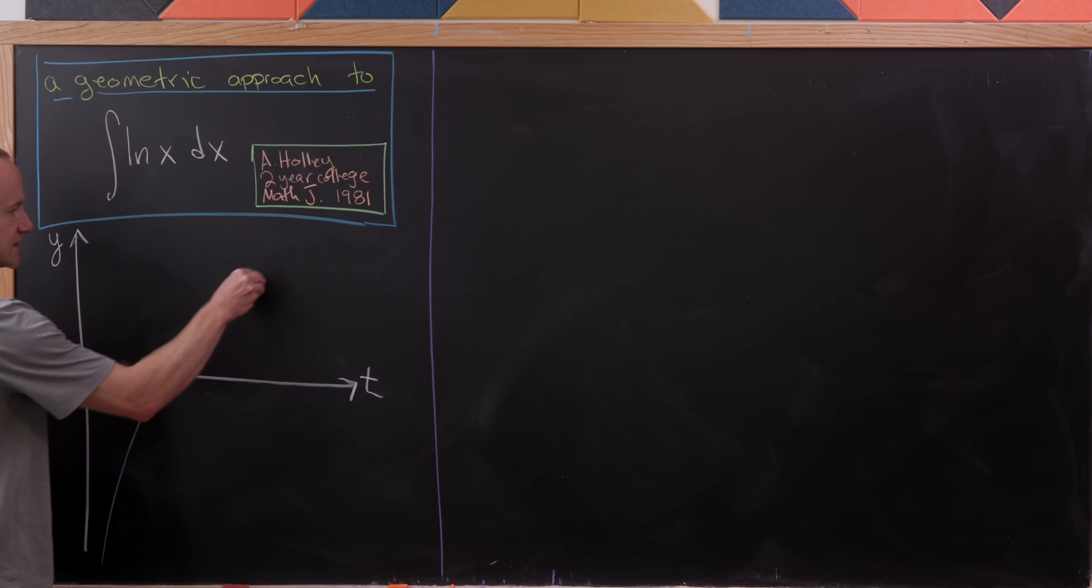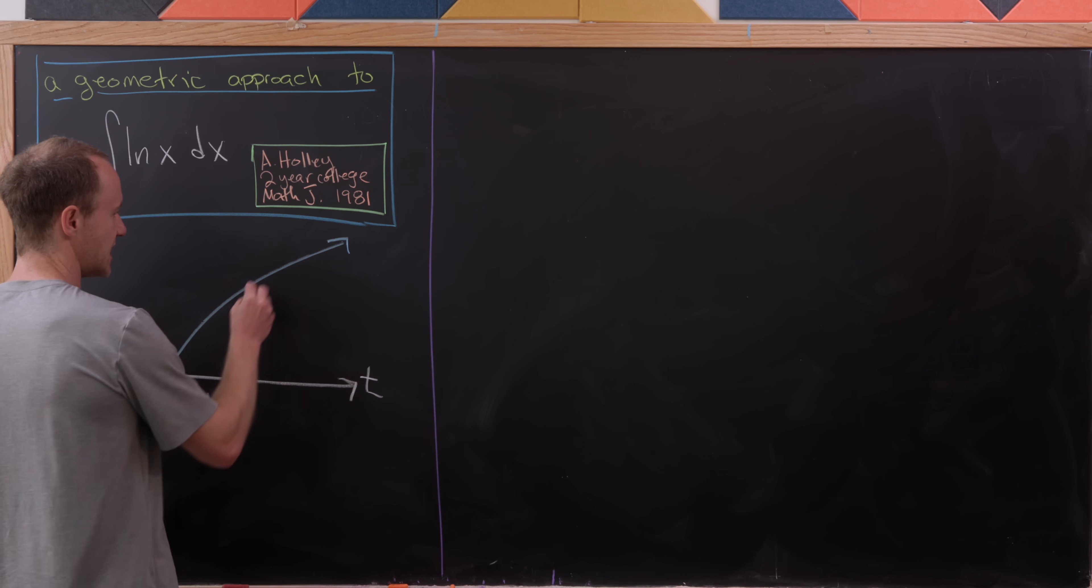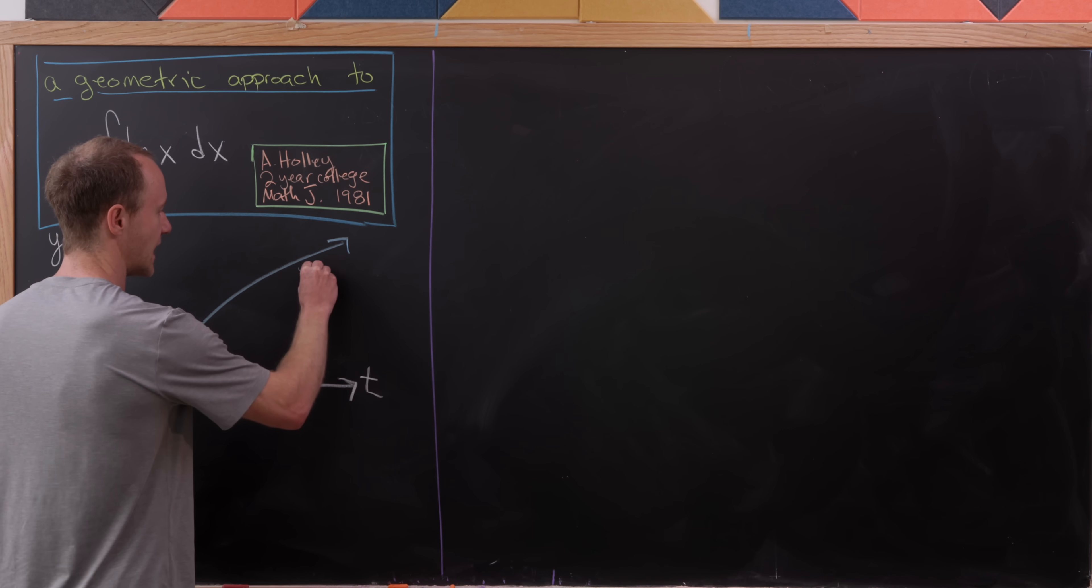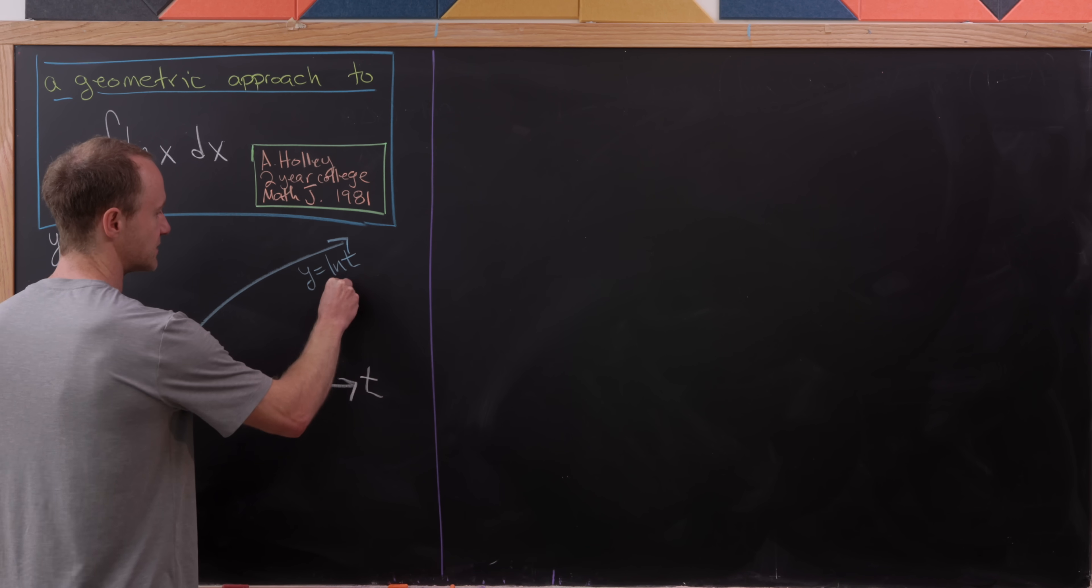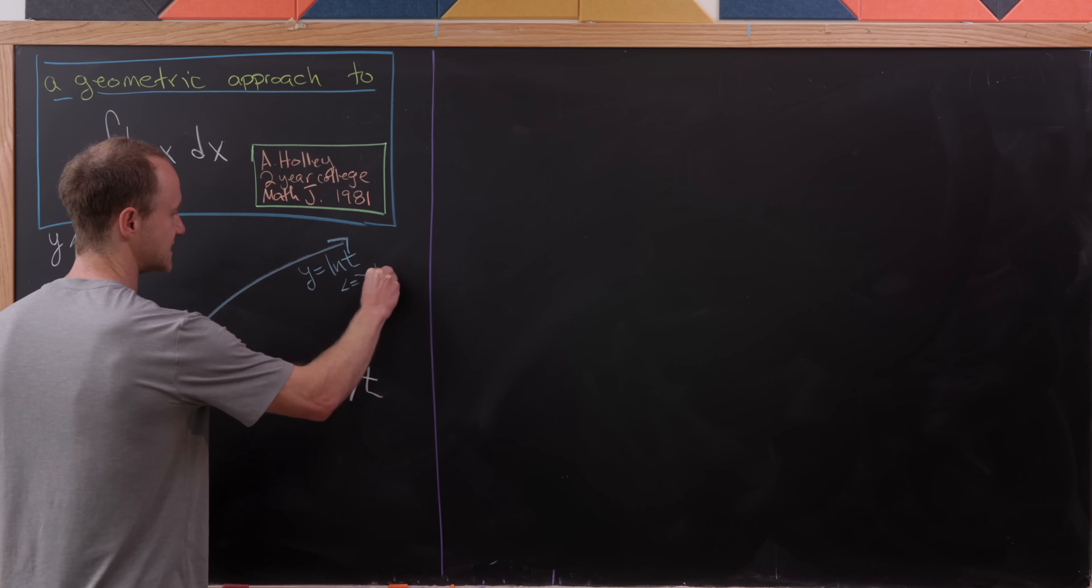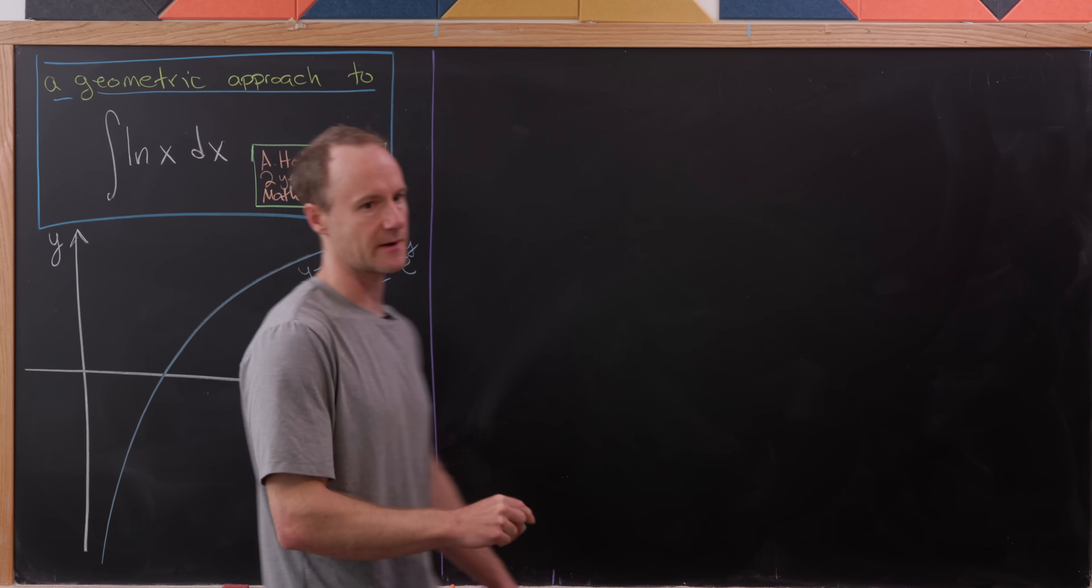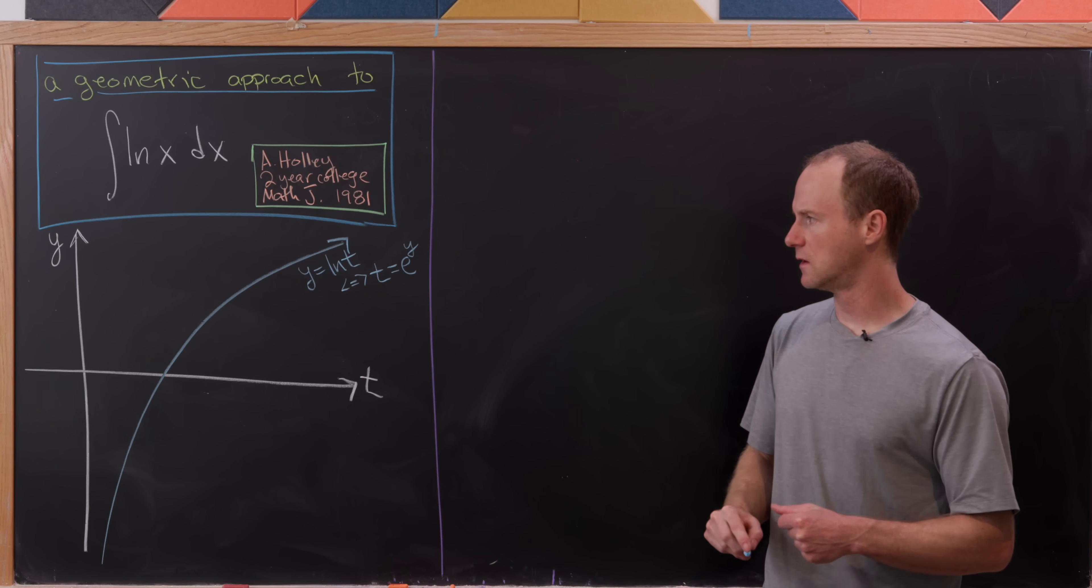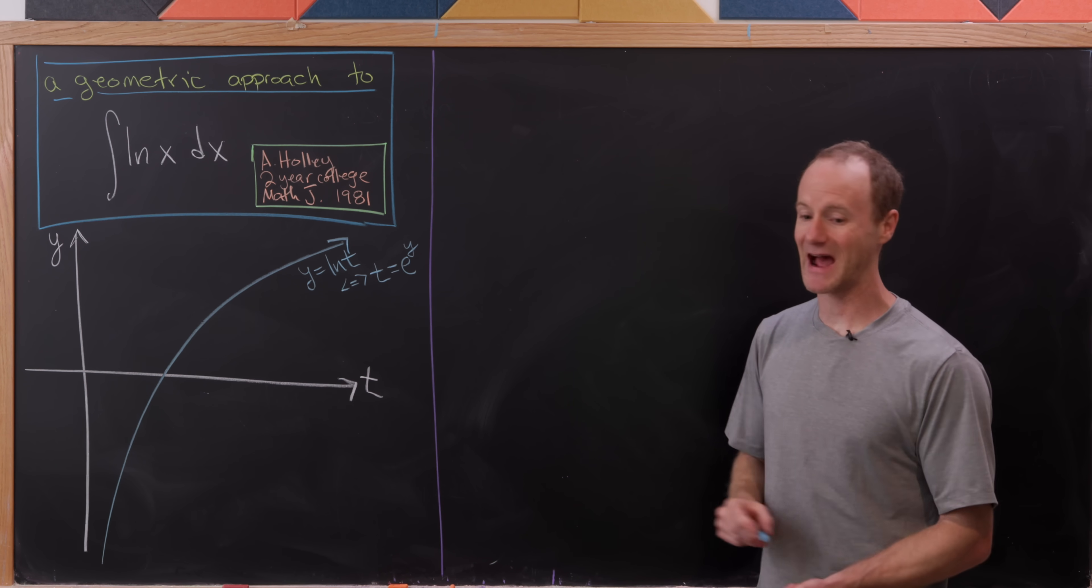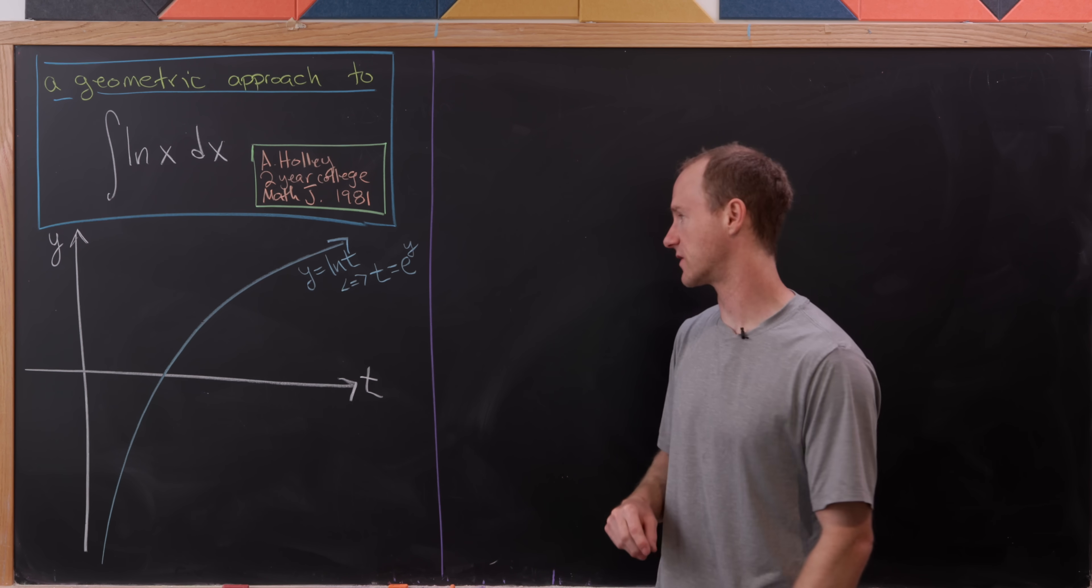This is the graph of our natural log function. So we have y equals the natural log of t, but observe that that is equivalent to saying that t is equal to e to the y, just based off the fact that the natural log and the natural exponential function are inverses of each other.